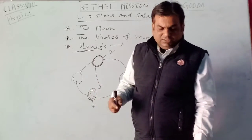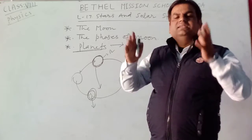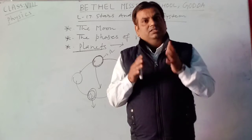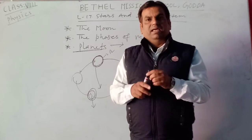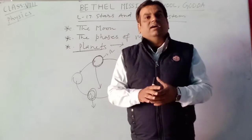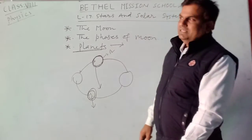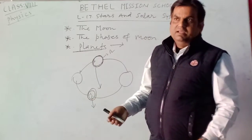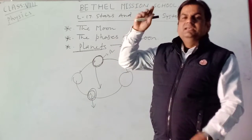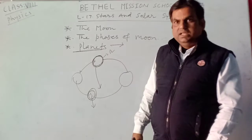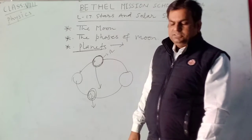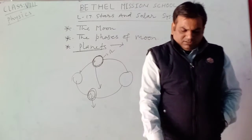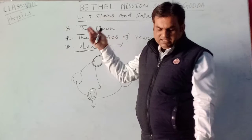We can identify some planets at night. Venus, Mars, and Jupiter are three planets we can identify at night. Venus appears in the east before sunset. Mars also shines in the sky — it is the red planet. Jupiter also appears and sets in the west.